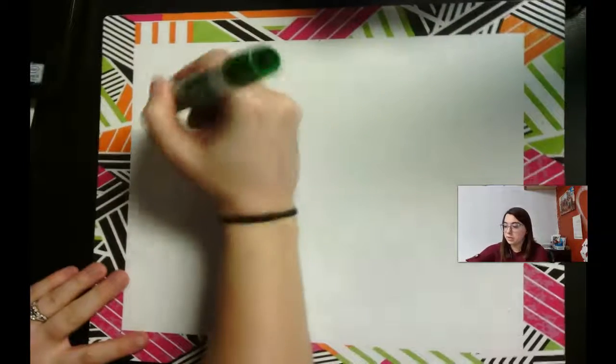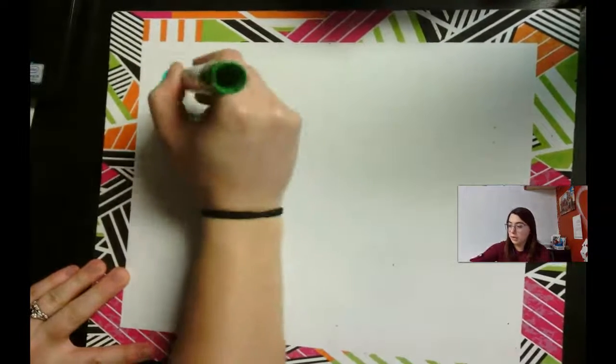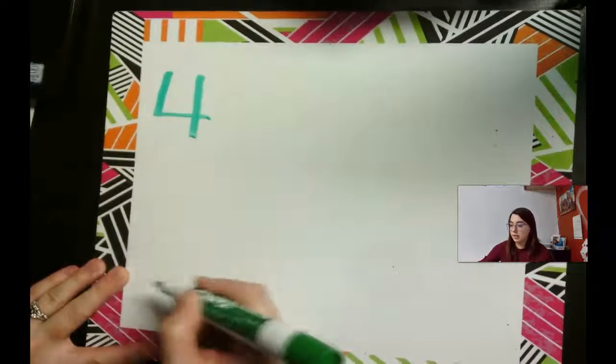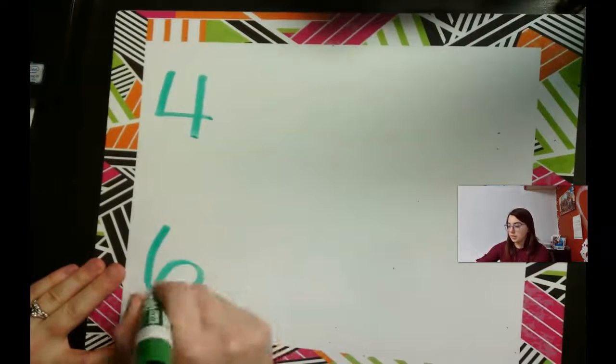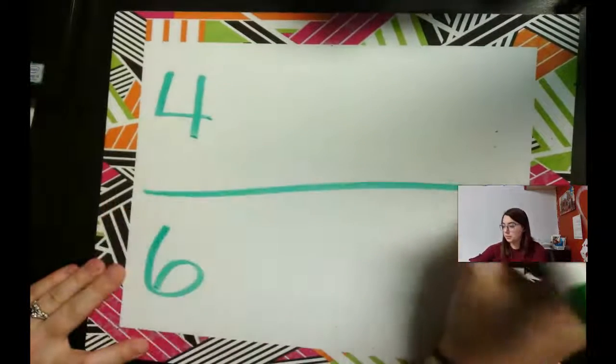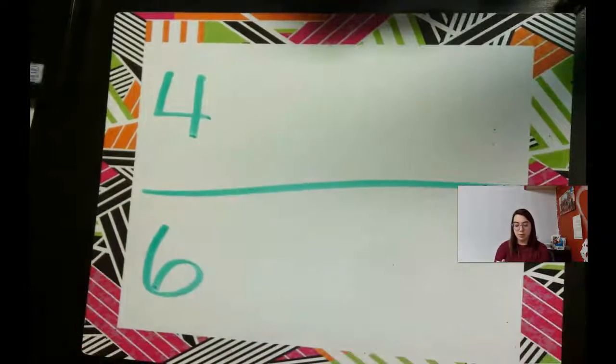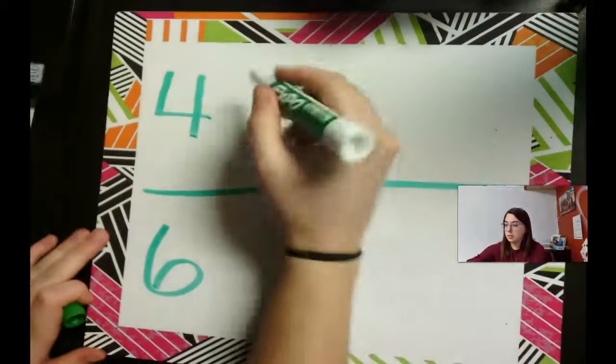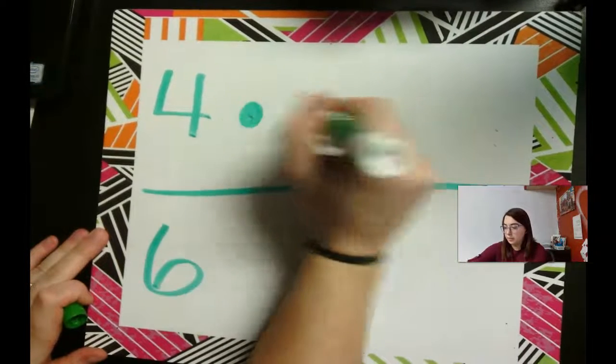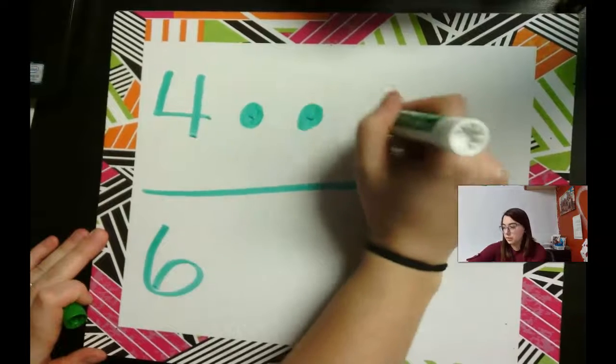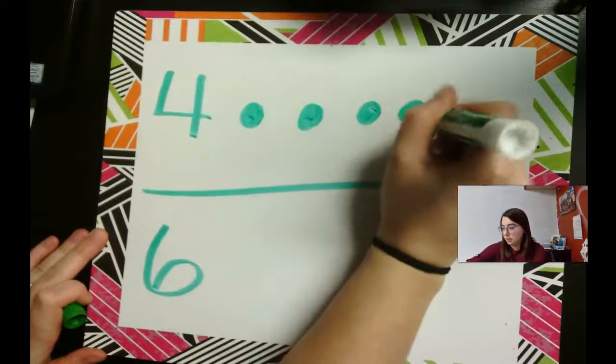Let's do it again, but with some different numbers. So let's do four and six. So I'm going to count and write to show each number. One, two, three, four.